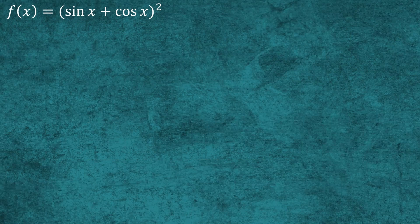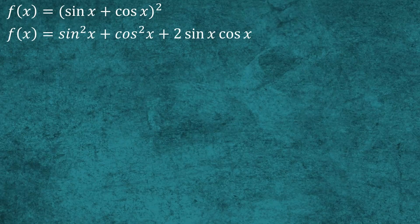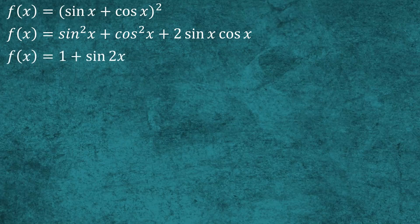Our function is f(x) = (sin x + cos x)². We expand the square and it becomes sin²x + cos²x + 2 sin x cos x, which reduces to 1 + sin 2x, since sin²x + cos²x = 1 and 2 sin x cos x = sin 2x according to the double angle identity.